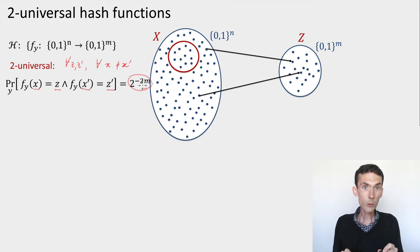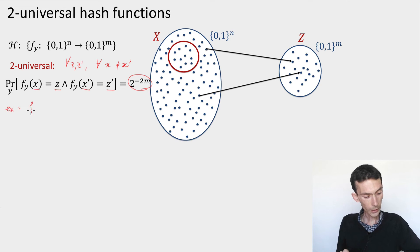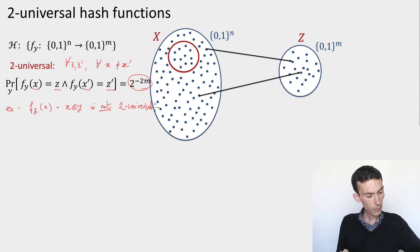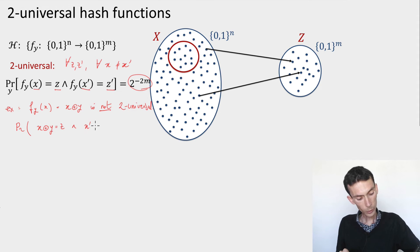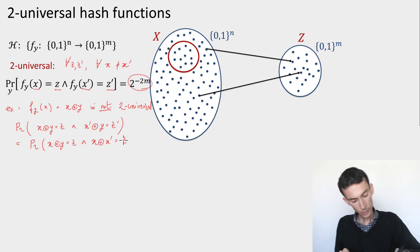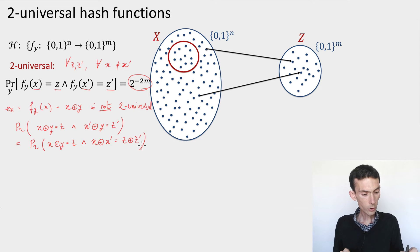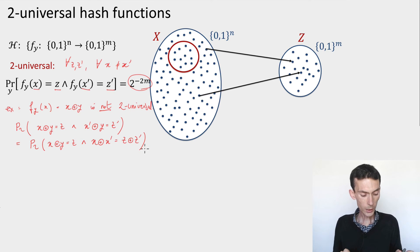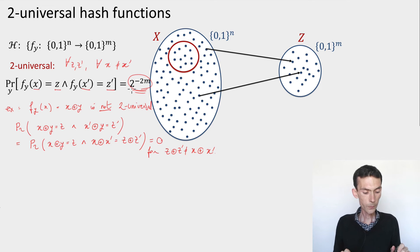Let's see why the XOR family is not two-universal. The probability that f_y of x equals z and f_y of x prime equals z prime — meaning x XOR y equals z and x prime XOR y equals z prime — if I take the XOR of the two equations, it equals the probability that x XOR y equals z and x XOR x prime equals z XOR z prime. Since this must hold for any z and z prime and any x different from x prime, if the XOR of z and z prime doesn't equal the XOR of x and x prime, you get zero instead of 2 to the minus 2m. So this is not a two-universal family.